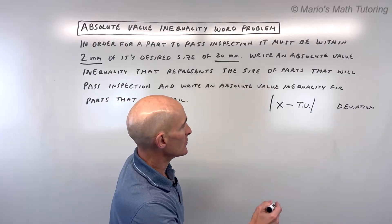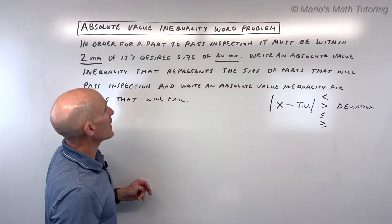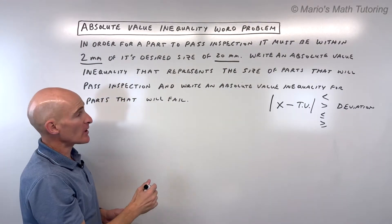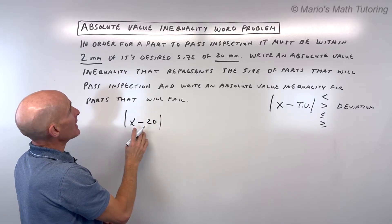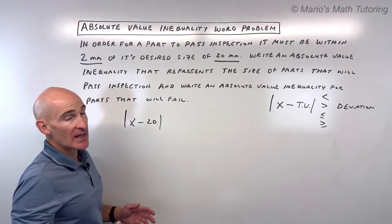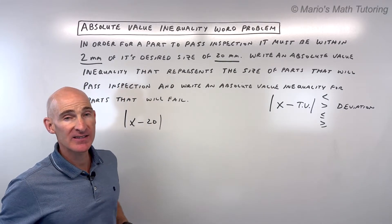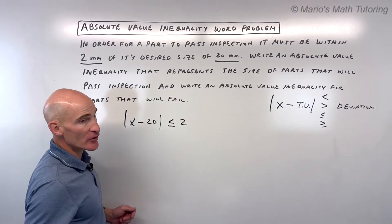This could be less than, greater than, less than or equal to, or greater than or equal to. In this case, our target value is 20 millimeters, so I write x minus 20. If it passes, it has to be within, meaning less than 2 millimeters away from that size. So within would be |x - 20| ≤ 2.